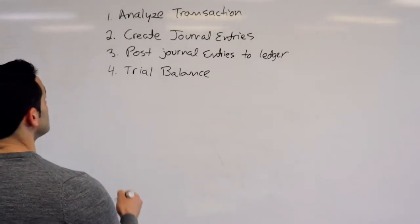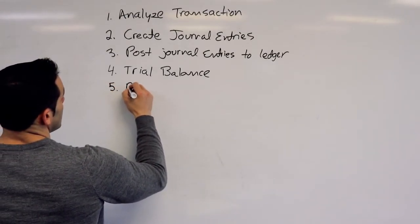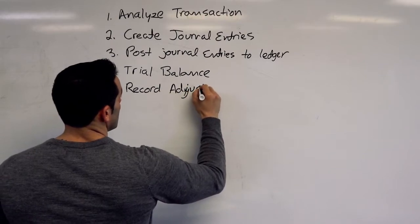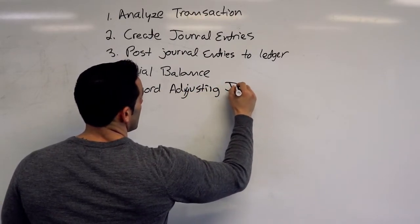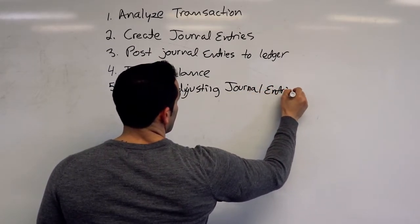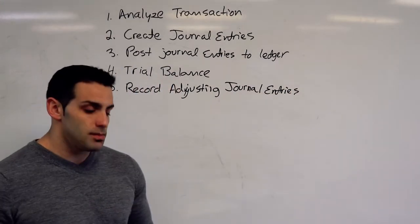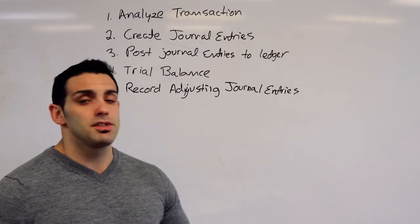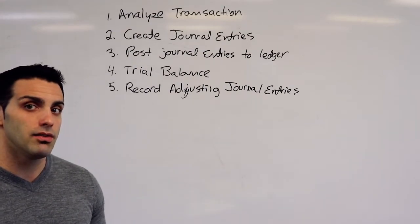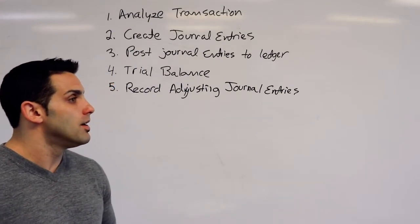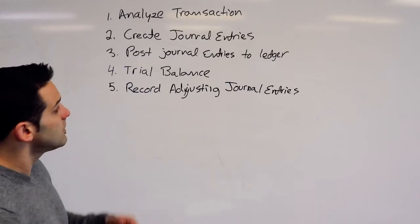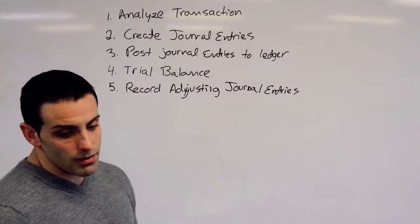So after our trial balance, we're going to record adjusting journal entries. So at the end of each period, these adjustments are necessary because we may use up supplies. We may have depreciation that occurred that we need to account for. There may be loan interest that we haven't accounted for yet that occurred during that period. So these are the adjusting journal entries that are going to happen.